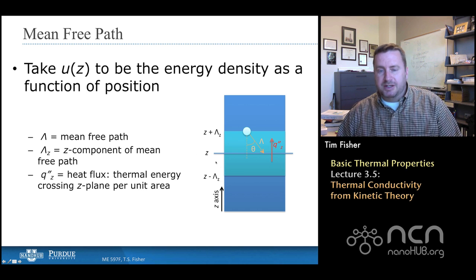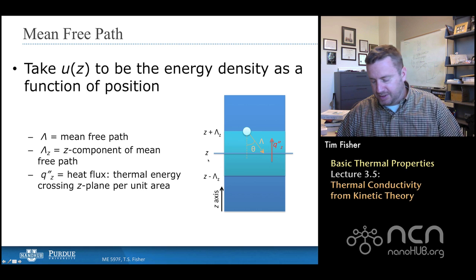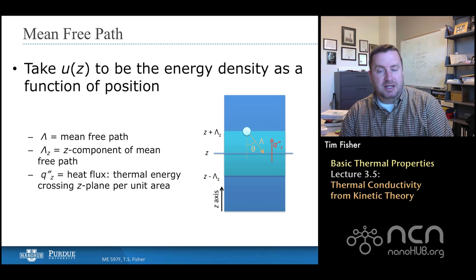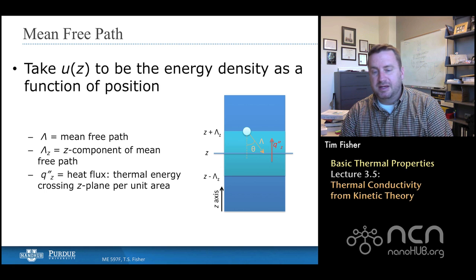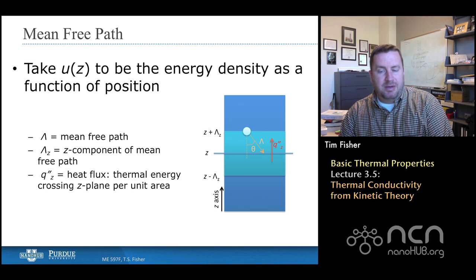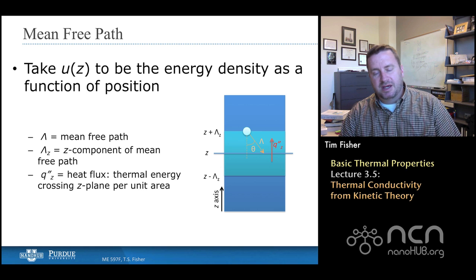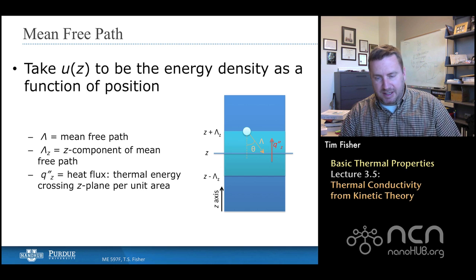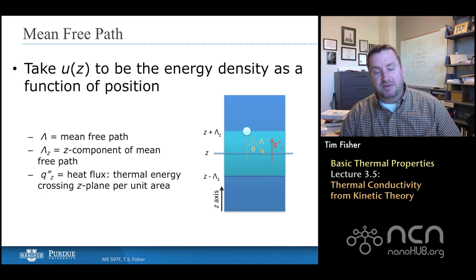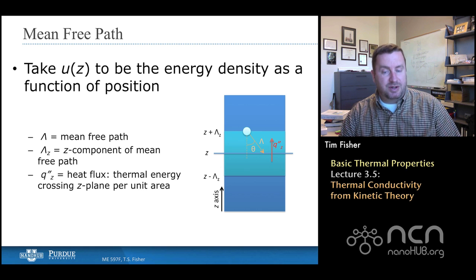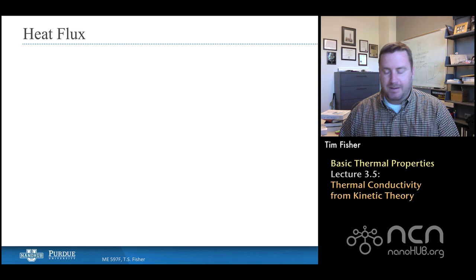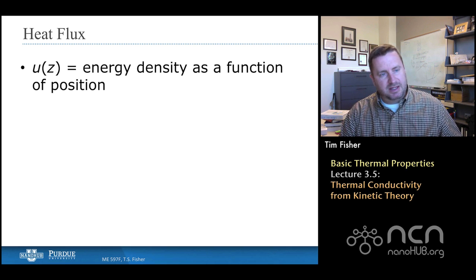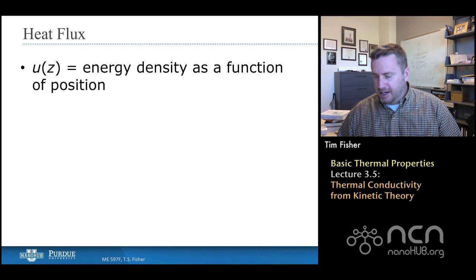If we broke up the problem into a series of zones, let's say that I want to pay attention first to this middle plane z, then above and below the plane z, I'll put two different planes at z plus lambda_z, that's the z-component of the mean free path, and minus lambda_z. I'm interested here to calculate, given this energy density field that depends only on z, how fast heat flows in this dimension z, and we'll say how fast it flows per unit area, so that's the heat flux. We'll call that q double prime with a subscript z to denote the direction that it's flowing.